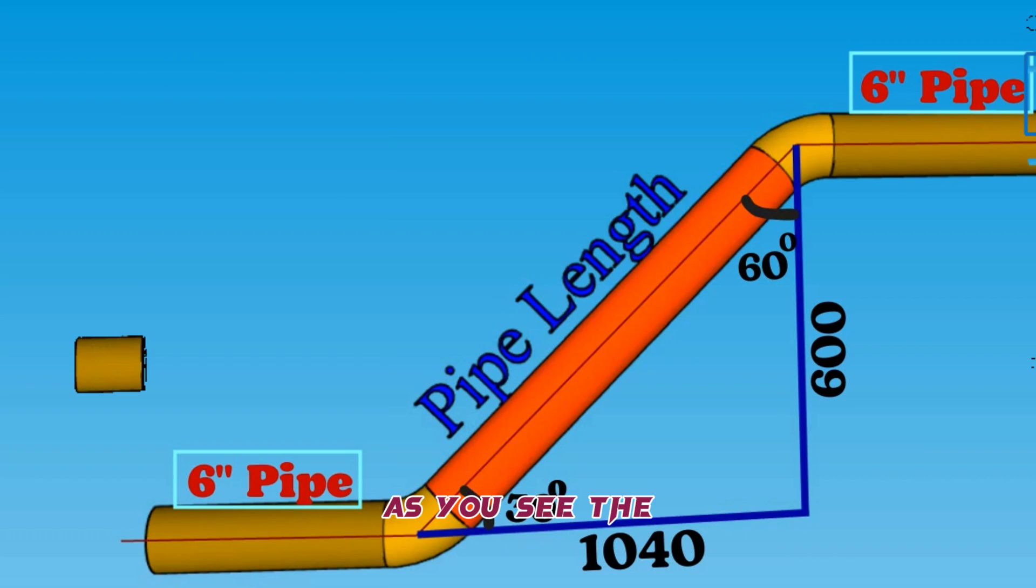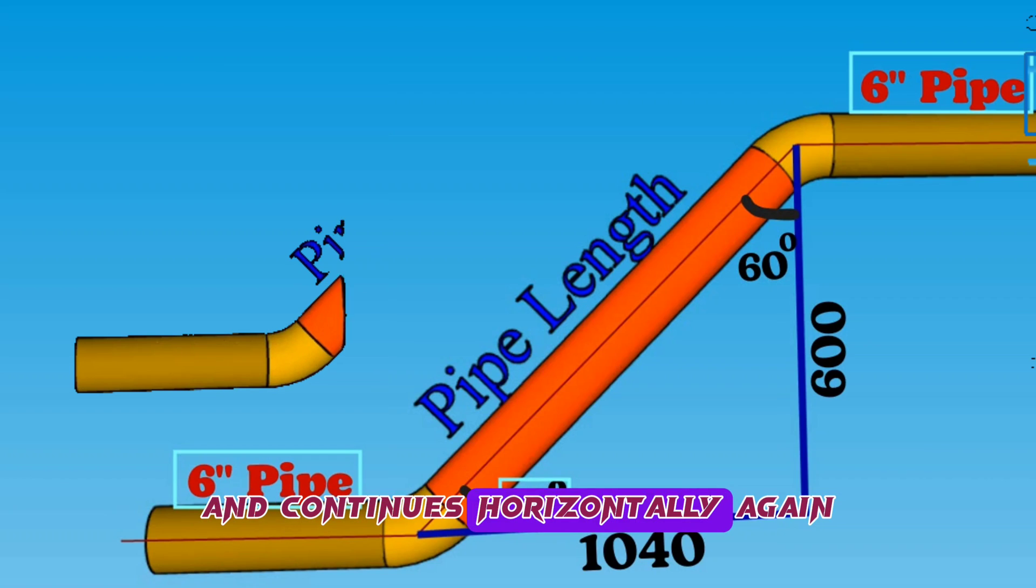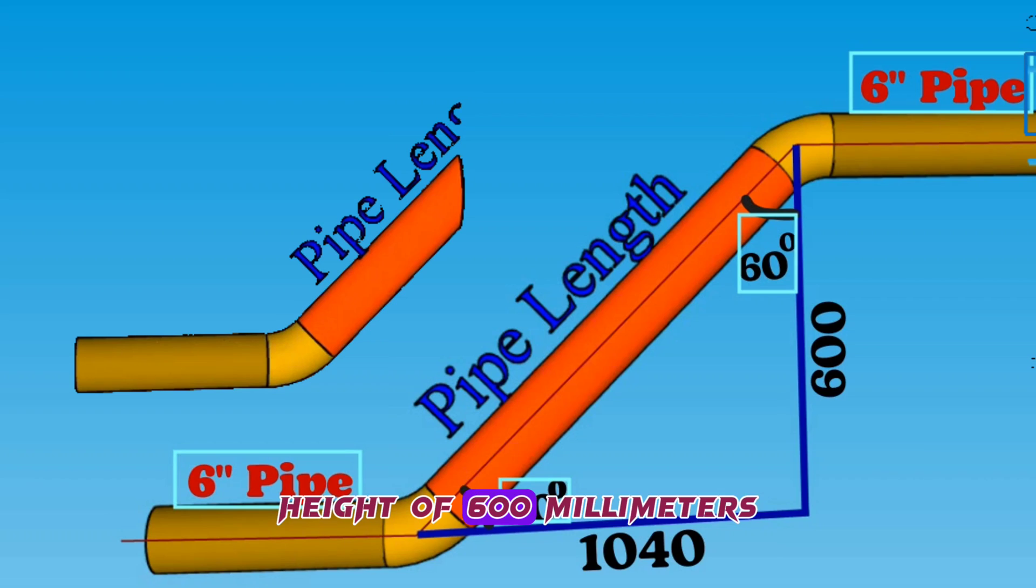As you see, the pipeline comes horizontally, then goes up at a 30-degree angle and continues horizontally again at angle 60-degree height of 600 millimeters.